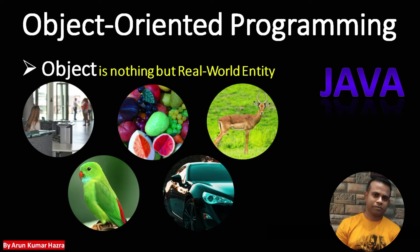Now if you think about it, all these objects have some properties and also some behavior. For example, take an animal. It has some name, it has some color, and it also has some behavior like its noise. Similarly, if we take an employee, the employee can have some name, it has some employee ID, and it has some behavior. So any real world entity is called an object, and an object has some states or properties and also some behavior.